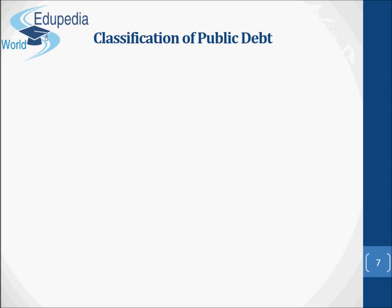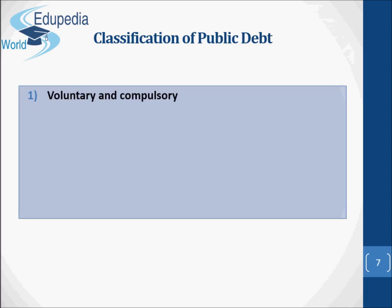Regarding the classification of public debt — first, voluntary and compulsory debt, on the basis of legal enforcement. Voluntary debt is debt which is repaid without legal enforcement, whereas compulsory debt is legally forced in nature. Here, people have no option but to repay the debt.